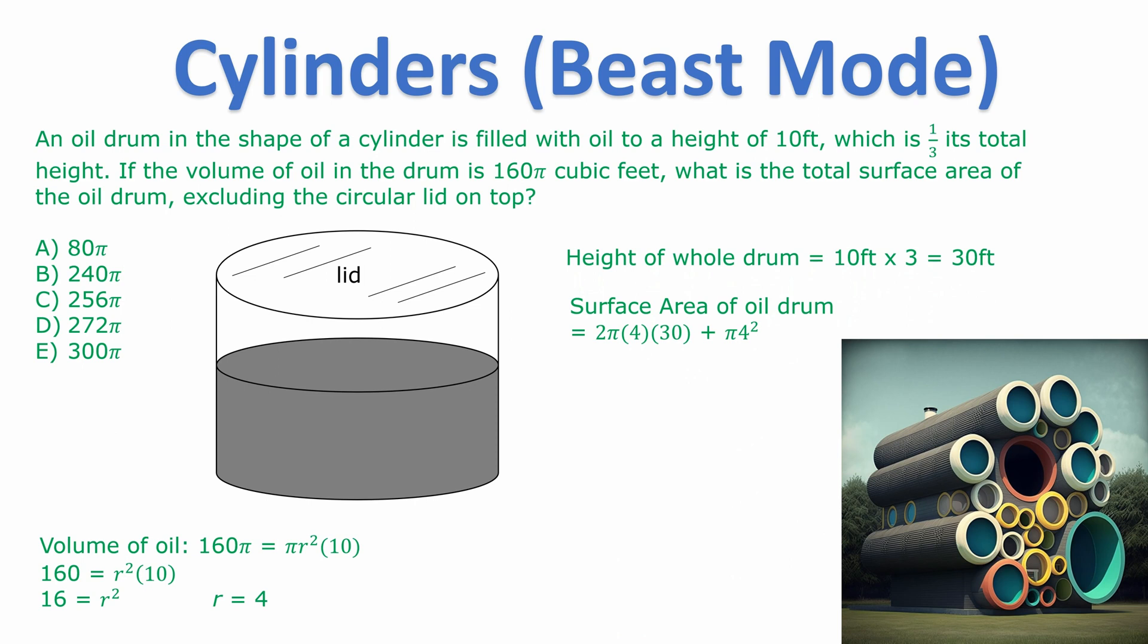Now we're going to use our curved surface area formula and put in the radius that we just worked out. And notice I've added a single πr². Why? Because this time we just have a base.